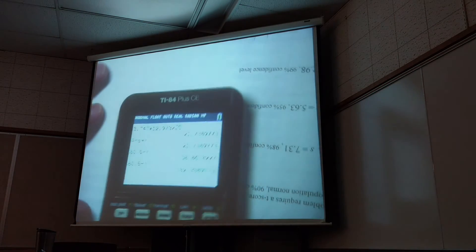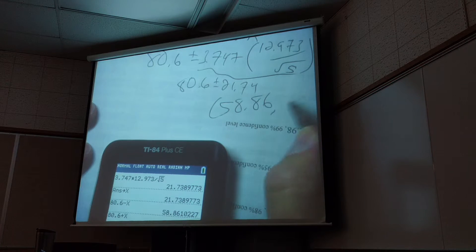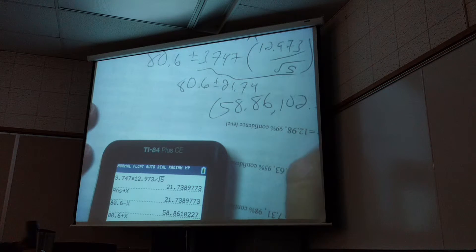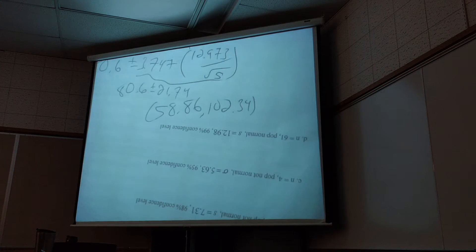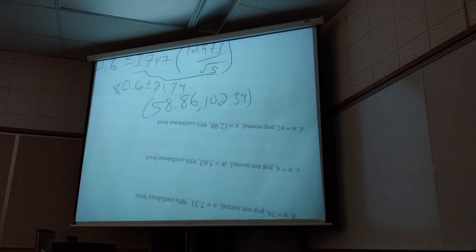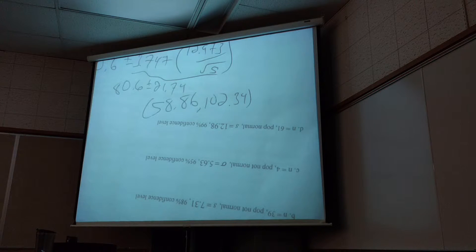So we get 58.86 up to 102.34 roughly, right? And then you would write, we are 98% confident that this interval, 58.86 to 102.34, contains the true mean grade in this class. You went to one decimal place, you're fine.